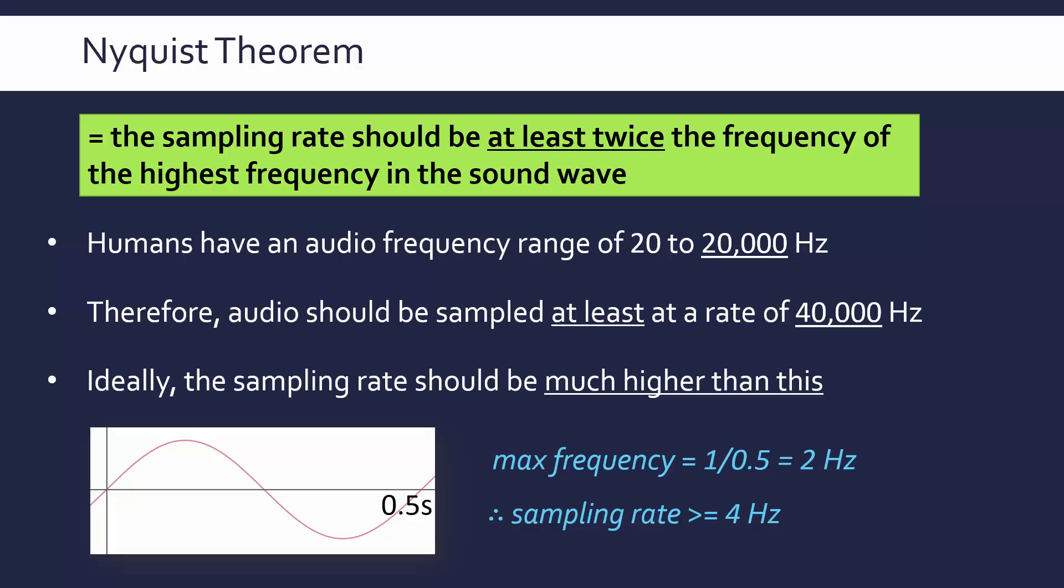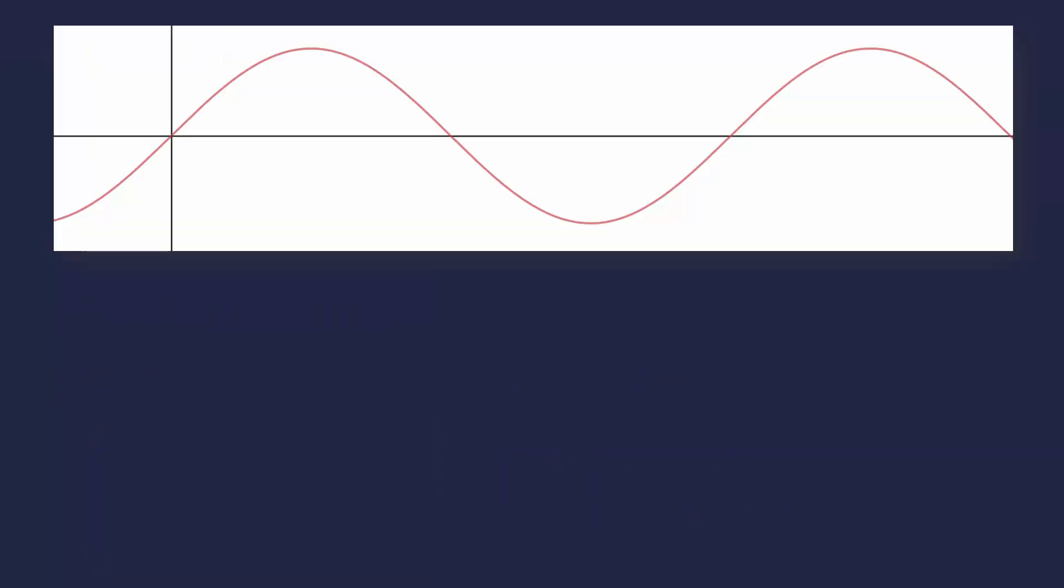So you just have to learn this theorem, really. Not a hard one to learn, but it does seem a little bit strange at first reading. I think I was confused the first time I came across this. But it makes sense once you've understood why it is this. Why is it twice as much and why is it the highest frequency which matters?